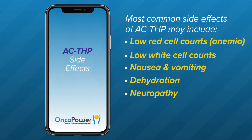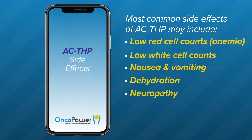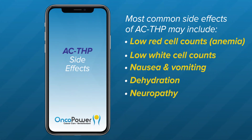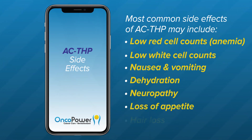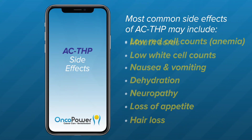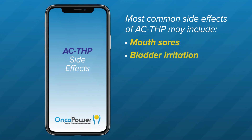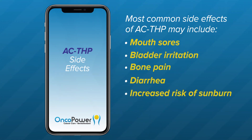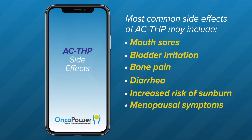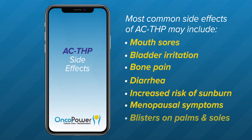Neuropathy: you may experience tingling or numbness caused by paclitaxel. When severe, you may have trouble with walking, buttoning your shirt, or handling a doorknob. Other common side effects include loss of appetite, hair loss, mouth sores, bladder irritation, bone pain, diarrhea, increased risk of sunburn, menopausal symptoms, and blisters on the palms and soles.